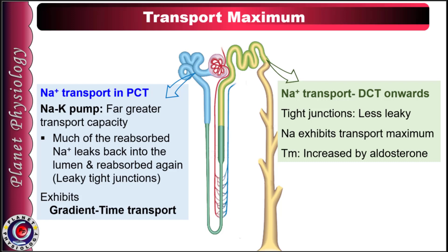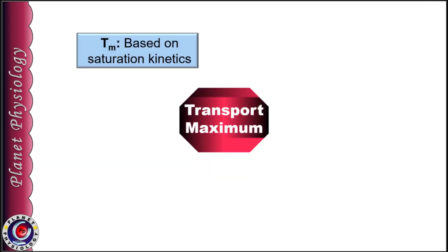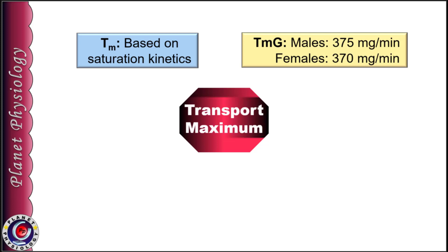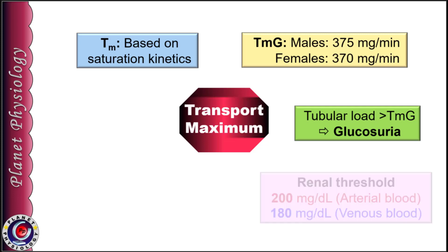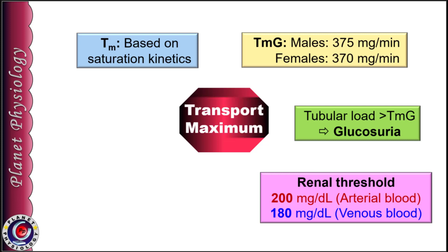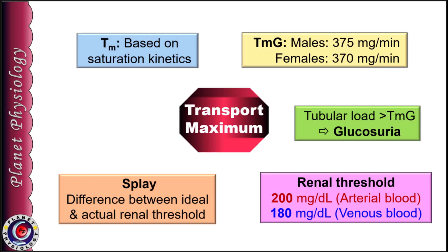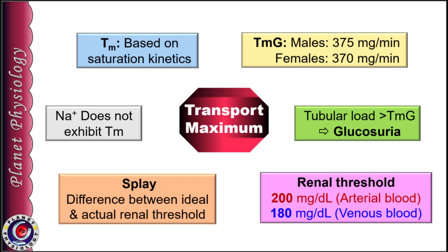So this is all about transport maximum. To summarize: Transport maximum is based on the principle of saturation kinetics of carrier proteins. Glucose is the main solute exhibiting transport maximum. TMG in males is 375 mg per minute and in females is 300 mg per minute. Glycosuria occurs whenever tubular load becomes greater than TMG. Renal threshold for glucose is 200 mg per deciliter in arterial blood and 180 mg per deciliter in venous blood. The difference between ideal and actual renal threshold is splay. Sodium, despite being actively transported, does not show transport maximum. Thank you for watching and see you in the next video.